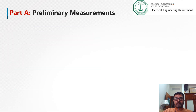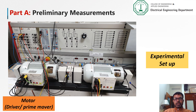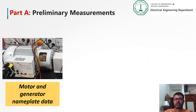In this experiment we have four parts. In the first part we will do some preliminary measurements. This is our experimental setup where we have two identical machines — on the left side we have one machine, on the right side we have another. These machines are known as multi-function machines; they can be used as a motor or a generator. We are using the left side machine as a motor and the right side machine as a generator, so the motor will work as a driver or prime mover for the rotor of the generator. In between we have a coupling device and a tachogenerator to measure the speed.